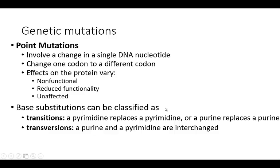These base substitutions can be classified two different ways. They can be a transition — where a pyrimidine replaces a pyrimidine or a purine replaces a purine. A transversion is where a purine and pyrimidine will be interchanged.